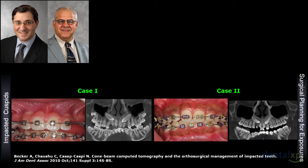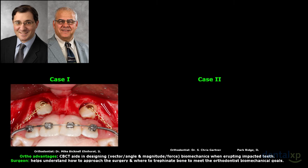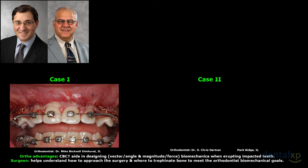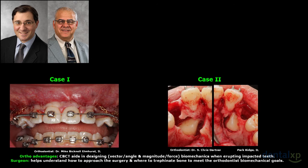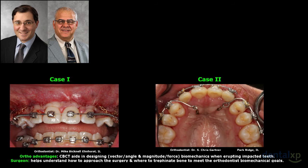From an orthodontic uncovery standpoint, we've been taught the SLOB rule — same lingual, opposite buccal — but today with imaging modalities we're able to understand exactly where those cuspids are in two cases that look relatively similar: one's facial, one the cuspids are palatal. This gives us an opportunity from an orthodontic standpoint to understand the vectors, angles, magnitudes, and force directions needed. From a surgical standpoint, it gives us the opportunity to understand how we're going to manage the bone — in one case going facial, in the other doing a palatal approach, removing some bone, placing the buttons, closing back up, allowing the orthodontist to achieve the necessary mechanics.